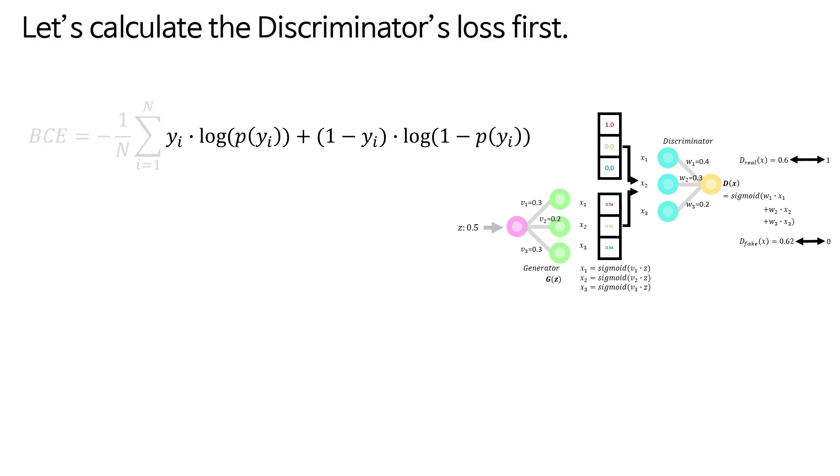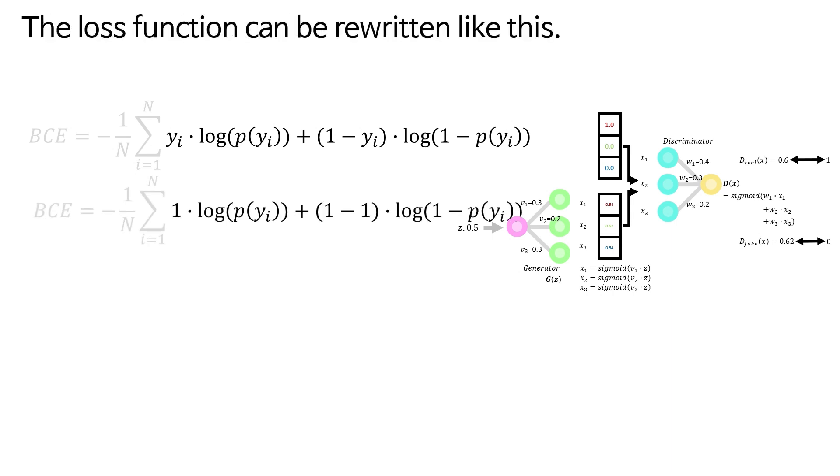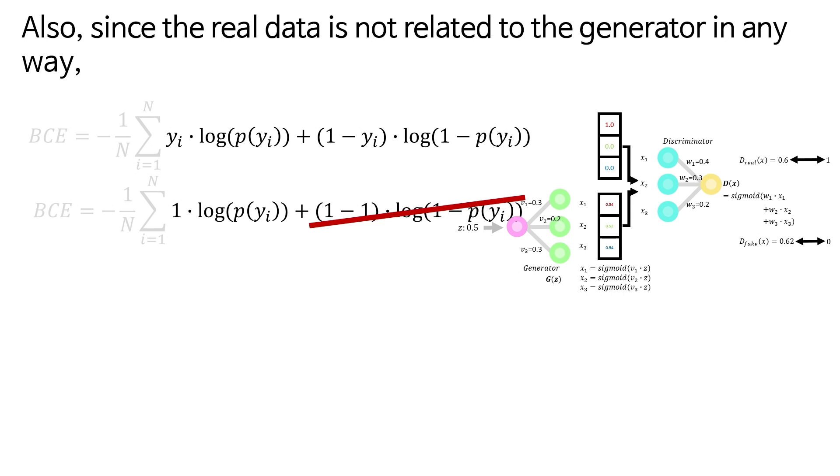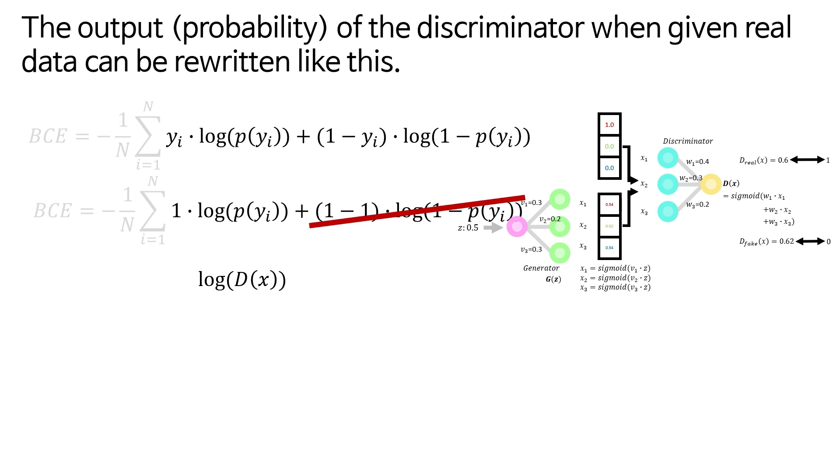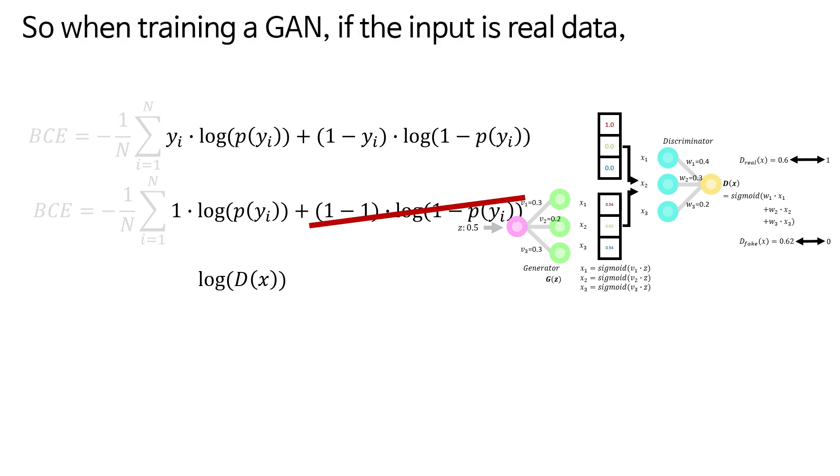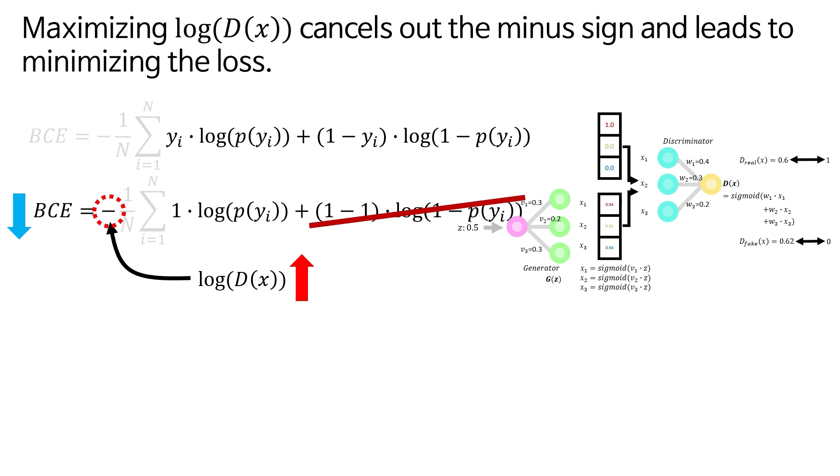Let's calculate the discriminator's loss first. When the input is real, the expected output is 1. The loss function can be rewritten like this. This part becomes 0 and drops out. Also, since the real data is not related to the generator in any way, the output probability of the discriminator when given real data can be rewritten like this. So when training a GAN, if the input is real data, maximizing log of D(x) cancels out the minus sign and leads to minimizing the loss.